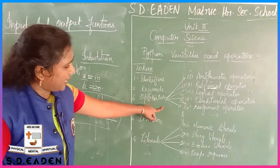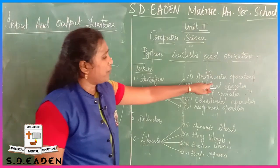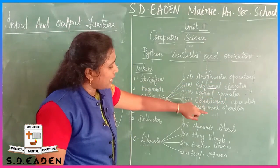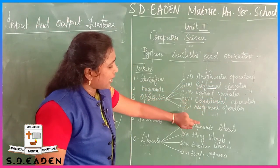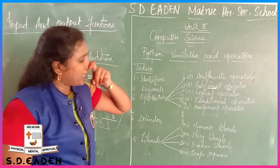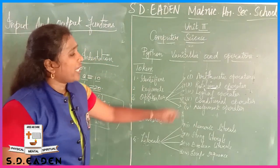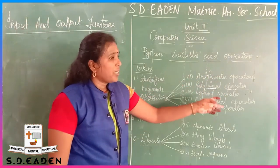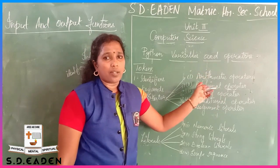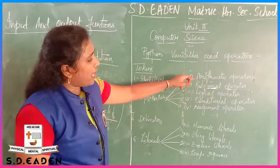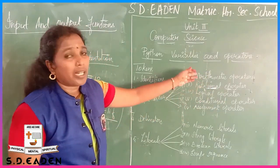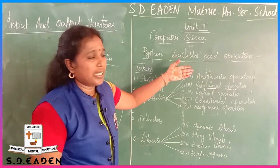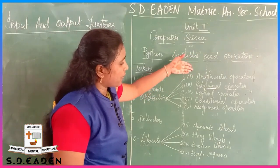Next are operators. Operators are: arithmetic operators, relational operators, logical, conditional, and assignment operators - there are 5 types. For arithmetic: addition, subtraction, multiplication, division, modulus, floor division - these are the arithmetic operators.